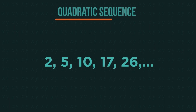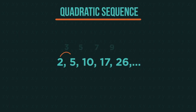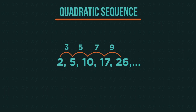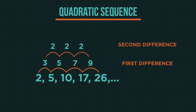The Fibonacci sequence is also linked to the golden ratio and is seen throughout nature. This is a quadratic sequence. If we look at the difference, it isn't the same. But if we look at the second difference, it is the same — which means it's a quadratic.